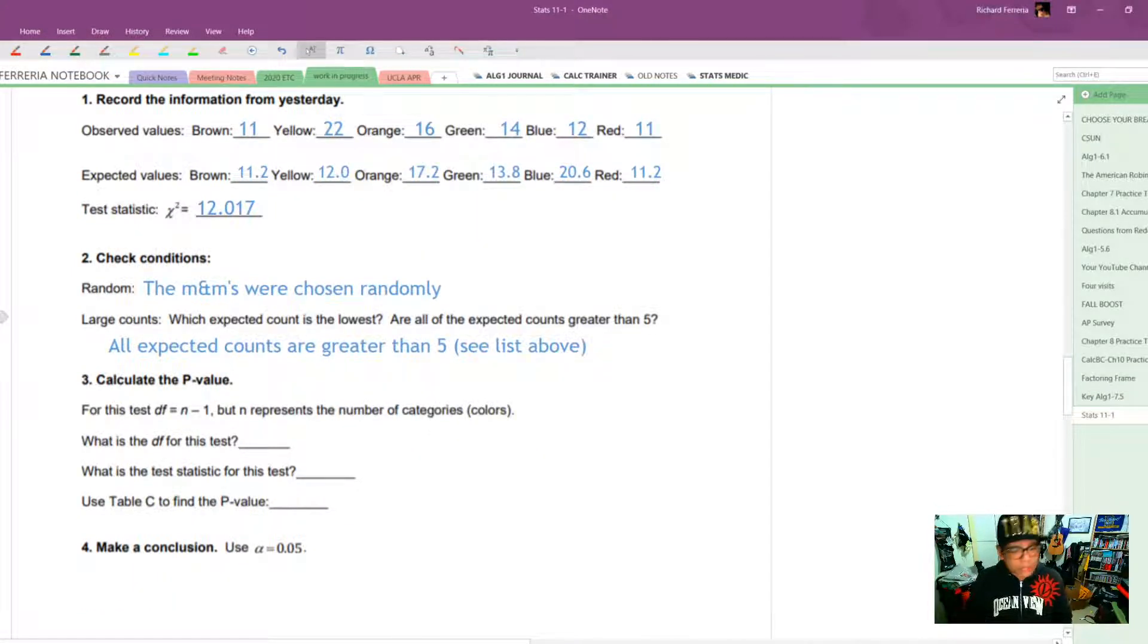Okay. Next, for this test, the degree of freedom is N-1. We talked about that. Six M&M categories, minus 1 is a DF of 5. Next, the test statistic. We already calculated that. 12.017. And finally, the P-value.